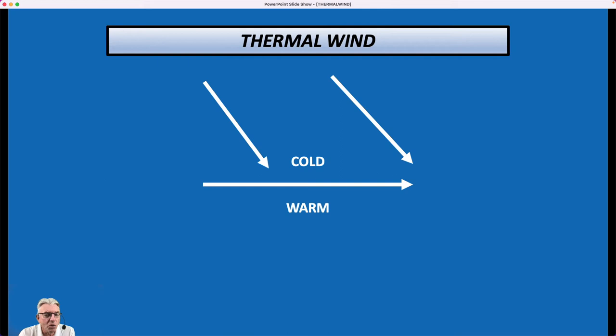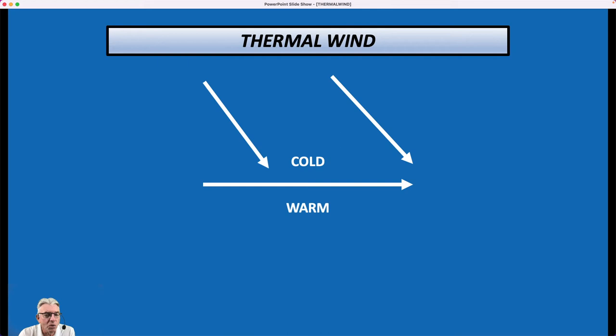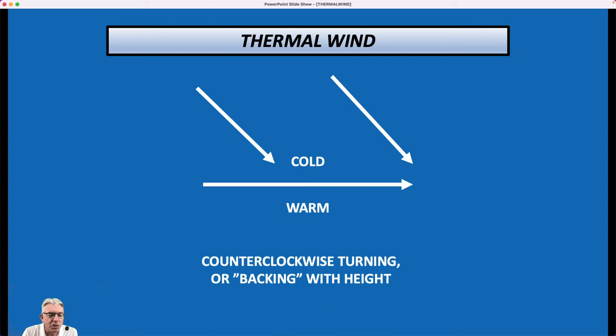Well, it had to rotate, and it rotated about 45 degrees counterclockwise. So in that situation, if the wind turns counterclockwise with height, we call that backing with height. It's backing up, if you will, and we associate that with what we call cold advection.